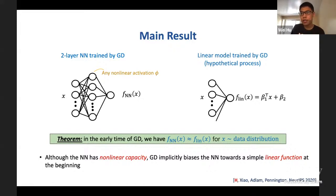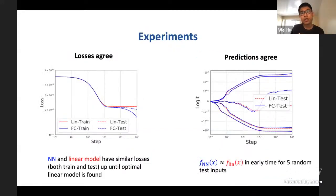Here are some experiments to verify this result. Basically, these plots are showing that the neural network and the hypothetical linear model basically behave the same in the early time of gradient descent, which verifies this theorem.